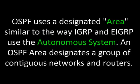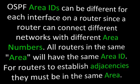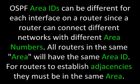OSPF uses a designated area similar to the way IGRP and EIGRP use the autonomous system. An OSPF area designates a group of contiguous networks and routers. OSPF area IDs can be different for each interface on a router since a router can connect different networks with different area numbers. All routers in the same area will have the same area ID. For routers to establish adjacencies, they must be in the same area.